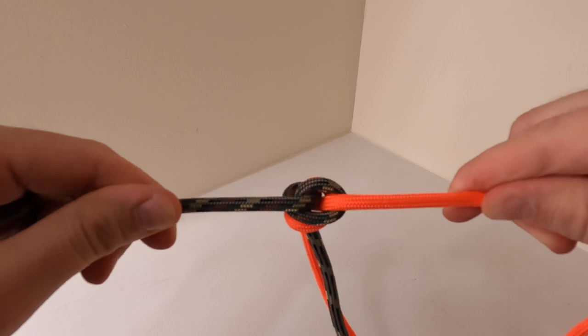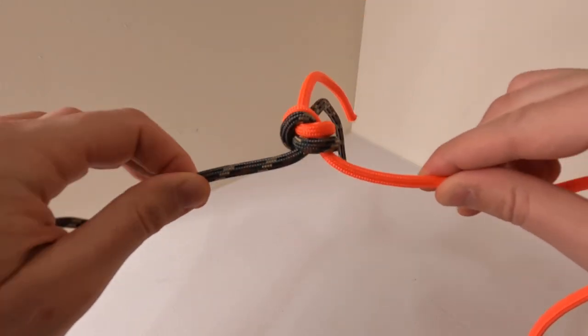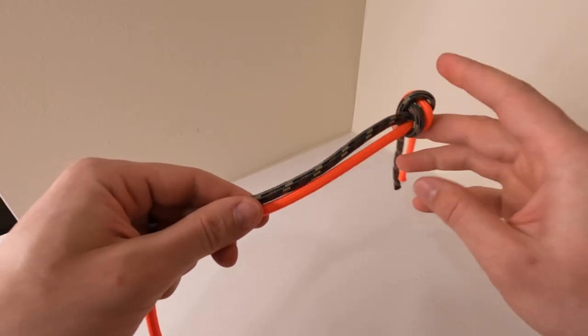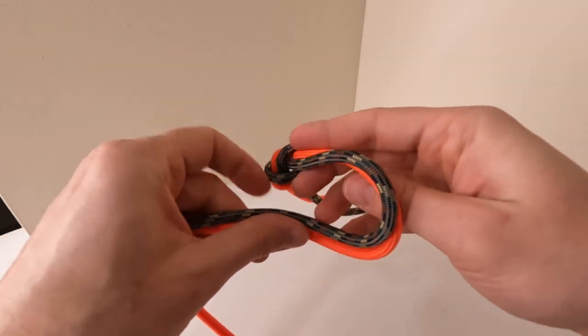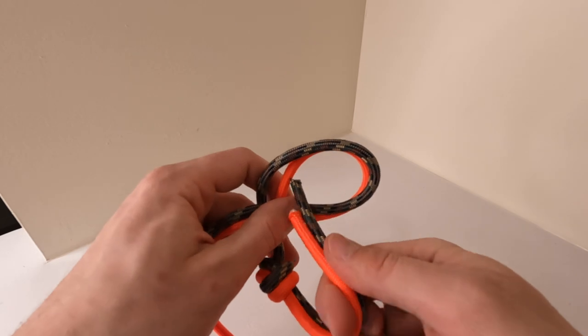Climbers prefer this knot for rope retrieval and some use it even for rappelling because it's less likely to get snagged on obstructions. Now there shouldn't be much slippage with this knot anyway but I have seen some use a double overhand knot to eliminate any potential slippage.